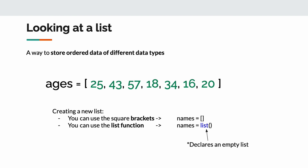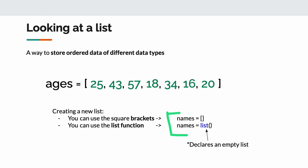It's also good practice to use a double set of quotation marks. Another type of data is a list. A list is a way to store ordered data of different data types. You can see I've named a list 'ages', and the value uses square brackets with a bunch of elements: 1, 2, 3, 4, 5, 6, 7. You can create a list in two ways — empty square brackets (old Python), or using the new list function. Both do the same task.